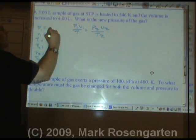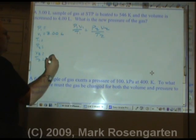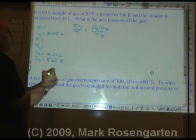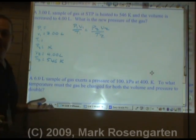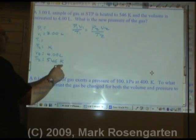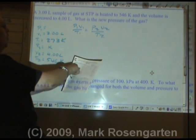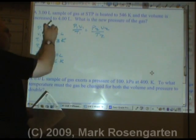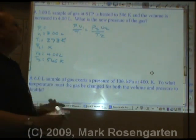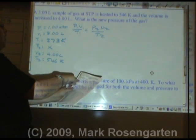A 3.00 liter sample of gas at STP is heated to 546 kelvin and the volume is increased to 4.00 liters. What is the new pressure of the gas? STP means standard temperature and pressure — from reference table A. Standard temperature is 273 kelvin. For standard pressure, since our answer isn't in a specific unit yet, we can choose atmospheres or kilopascals. Keeping it easy: 1.00 atm is standard pressure. How do I know? Reference table A — standard pressure, 1 atm.